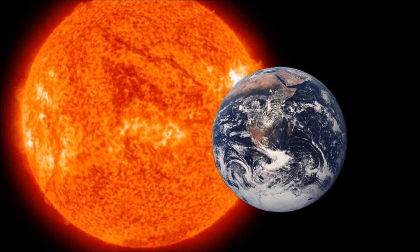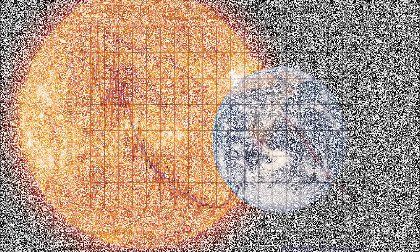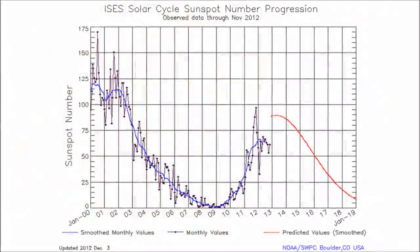Sunspots can vary from day to day, but they also tend to follow an 11-year cycle of activity. During peaks in the sunspot number, even very low-power stations can often be heard around the world. Sunspot numbers can also vary on a 27-day cycle due to the rotation of the sun.